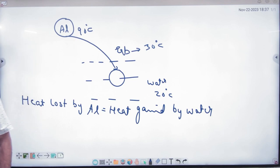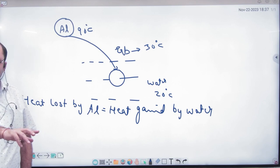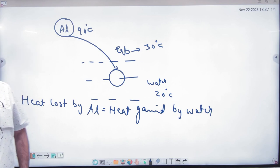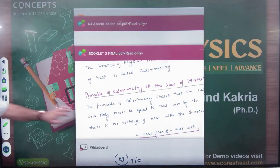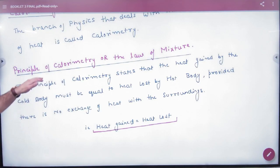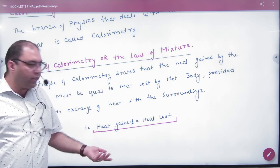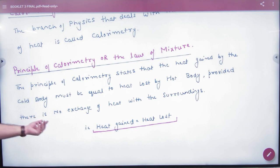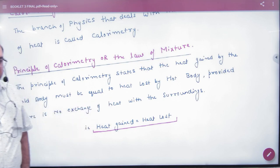If it is in the surrounding area, it will be called energy conservation. So this rule is called the principle of calorimetry. Principle of calorimetry states that the heat gained by the cold body must be equal to heat lost by the hot body, provided there is no exchange of heat with the surrounding.